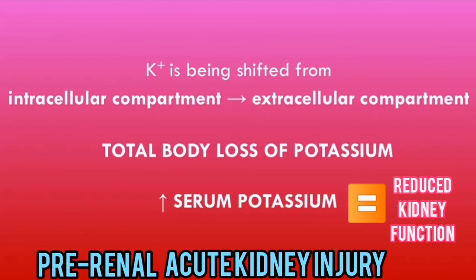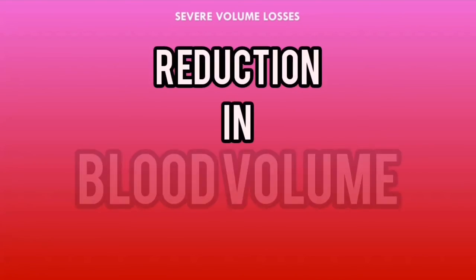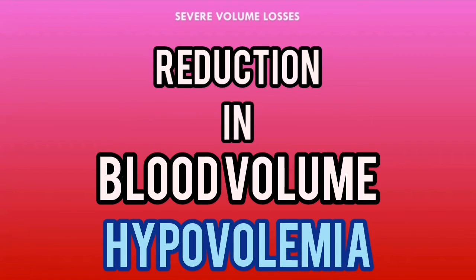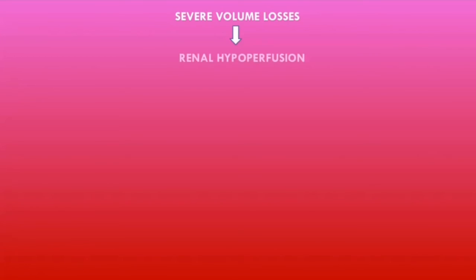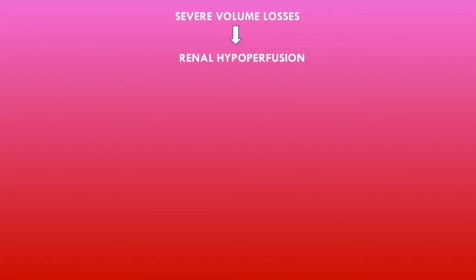Let's talk about how patients develop a pre-renal acute kidney injury and why they develop hyperkalemia. As discussed in the last video, there are very severe volume losses in DKA, particularly due to the severe polyuria patients develop. This volume loss leads to a reduction in blood volume — hypovolemia — which reduces blood flow to the kidneys. With less blood reaching the kidneys, less blood gets filtered, resulting in a reduction in the glomerular filtration rate. This is the basic pathophysiology of a pre-renal acute kidney injury.